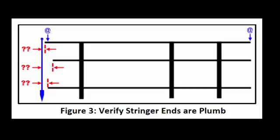To verify stringers are generally in line, also called ends are plumb, hang a plumb bob from the end of the top stringer such that the string doesn't touch any stringers. Measure from the string to the end of each stringer. Repeat these measurements at both ends of the structure. If the ends of the stringer are more than plus or minus one inch from plumb, contact the project manager.